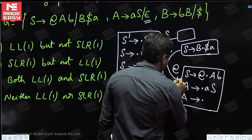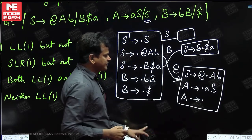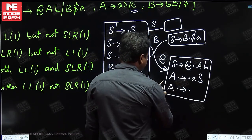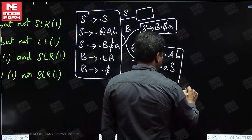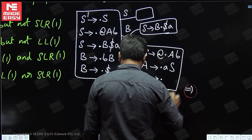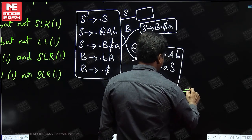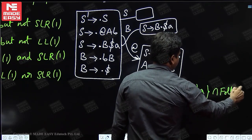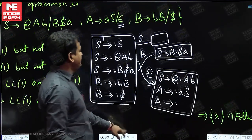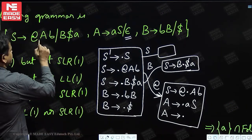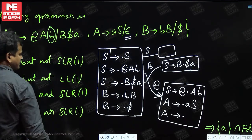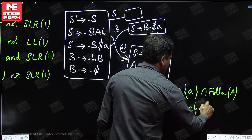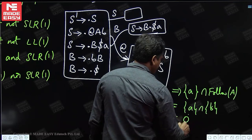Whenever we have a final item, take the follow of that non-terminal and check against the shift symbol. The shift symbol here is A. Follow of A is B (since A appears in S → at-the-rate A B). So we check: {A} intersection follow of A = {A} intersection {B} = empty. We do not have any conflict.